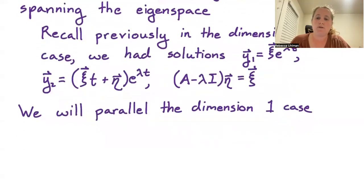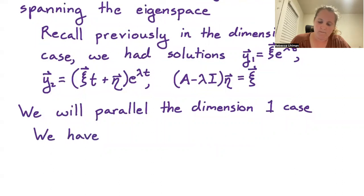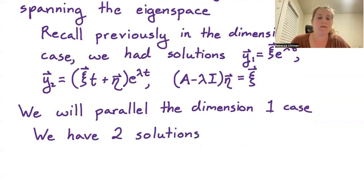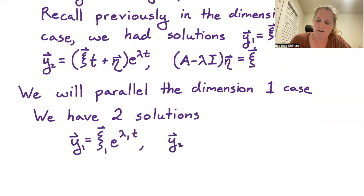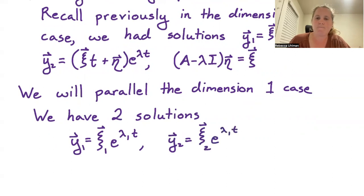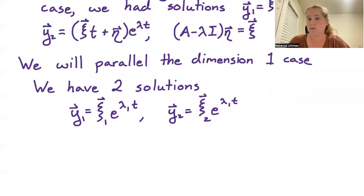So we have our first two solutions using those linearly independent eigenvectors: y1 equaling xi 1 times e to the lambda 1 t, and y2 equaling xi 2 times e to the lambda 1 t. To find the third solution, we will use the same trick as before, but the issue is that it may not be xi 1 or xi 2 that we use.